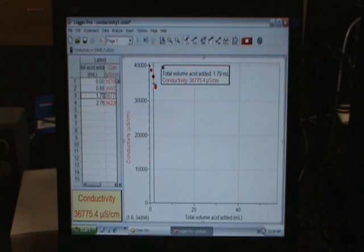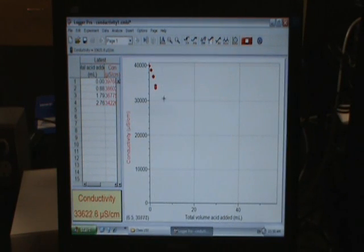It's telling me for this data point that's highlighted with a black circle, the total volume of acid added is 1.79 milliliters. The conductivity is 36,000 and change. So, that can be useful for some things. We can get rid of that just by closing that dialog box.